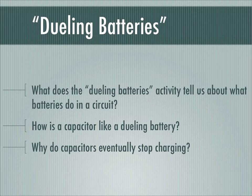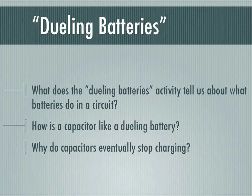Now I can see why capacitors would eventually stop charging — why the light bulb goes out when you're charging a capacitor — because the capacitor has become like a battery opposing the real battery. It reaches the strength of the original battery, completely canceling it out, so charges don't move anymore and the light bulbs go out. A capacitor that is charged is one that has acquired the same backwards push that the original battery is pushing forwards with.